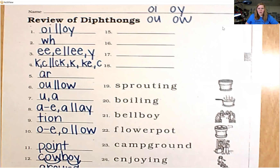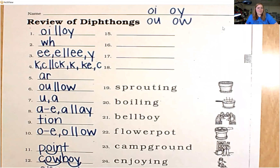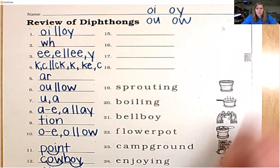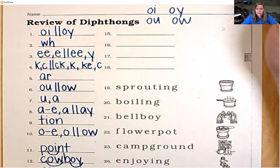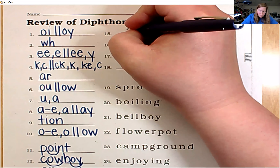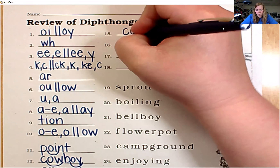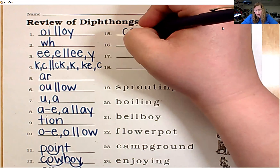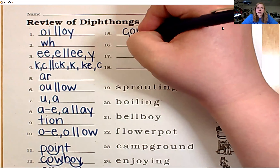Moving back up to the top. Number 15, let's spell the word coin. That oy sound is in the medial position, so we'll use OI. C-O-I-N. Coin.